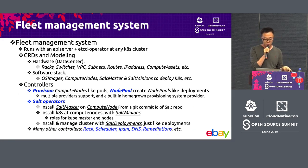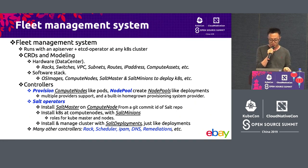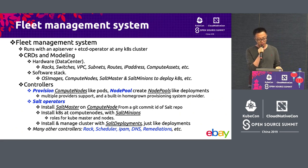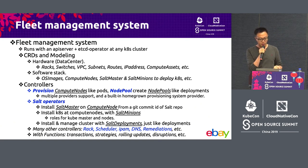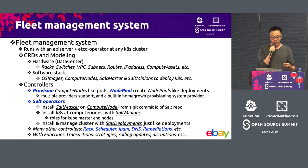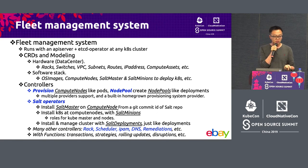We have many other controllers as well — for example, rack controllers which take care of bootstrapping, the scheduler, IPAM to do IP allocation, DNS controllers, and remediation controllers that take care of the compute nodes lifecycle management. With all those controllers and models, we have many functions inspired by Kubernetes — for example, transactions, rolling updates, disruption budgets, and all kinds of stuff. So this is a typical model-driven automation — the way we think we can use to unify eBay's fleet with Kubernetes.